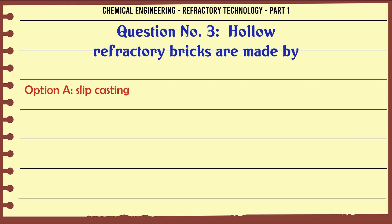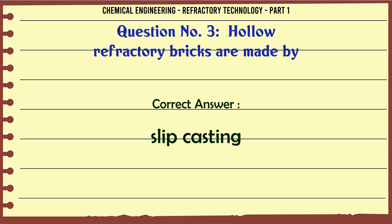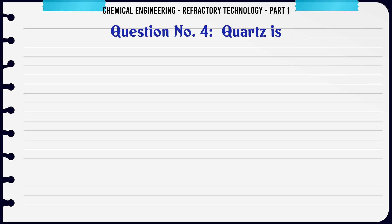Hollow refractory bricks are made by: A. Slip Casting, B. Hand Moulding, C. Pressing Machine Moulding, D. Extrusion. The correct answer is Slip Casting.